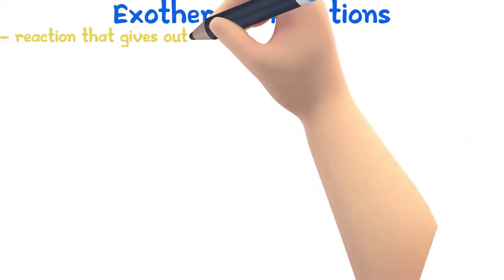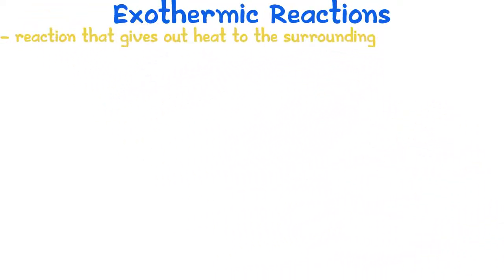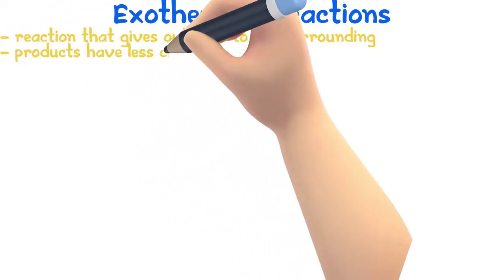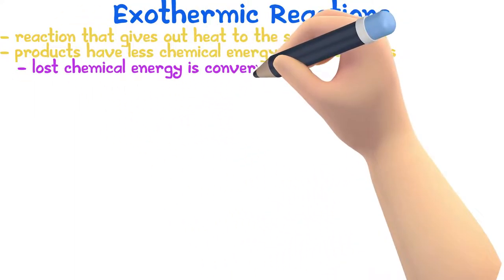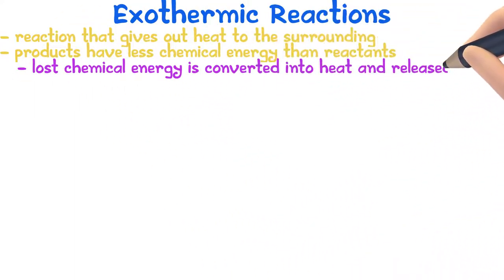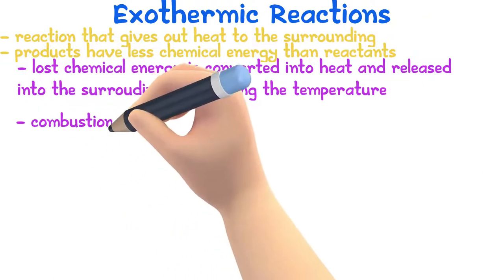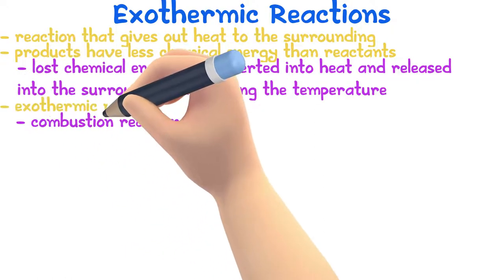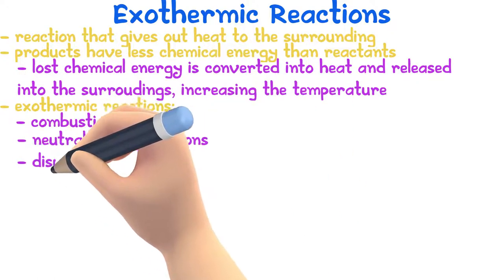A reaction that gives out heat to the surroundings is called an exothermic reaction. For exothermic reactions, the products have less chemical energy than the reactants, since chemical energy is converted to heat and released to the surroundings, causing an increase in temperature. A combustion reaction is exothermic because burning produces heat energy. Other exothermic reactions include neutralization reactions and displacement reactions.